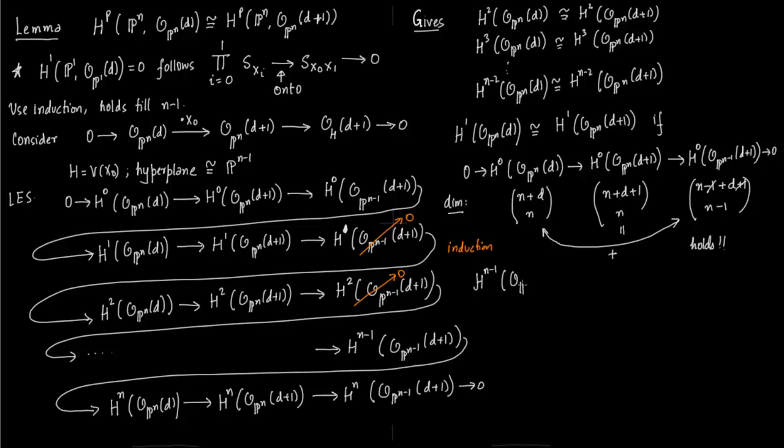Now for H^(n-1): so H^(n-1)(O_P^N(d)) is equal to H^(n-1)(O_P^N(d+1)). So this holds if we have a short exact sequence again and that short exact sequence would mean delta is injective.